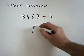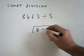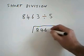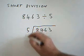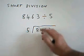Same mechanism. 8463. Put the 5 there. That's what we're dividing by.